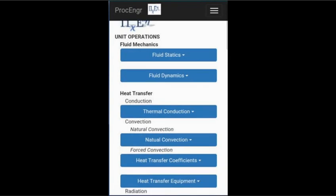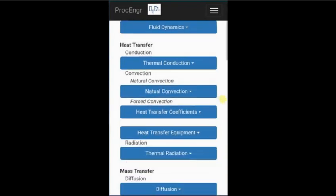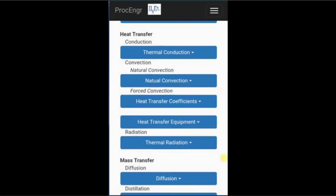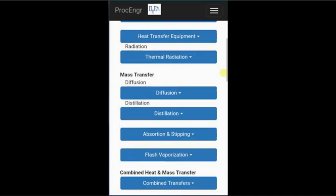We will go down the table of contents until we arrive at the section for combined heat and mass transfer operations. Then we will select evaporation from the drop-down submenu.